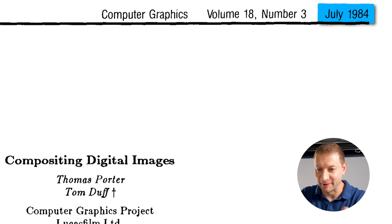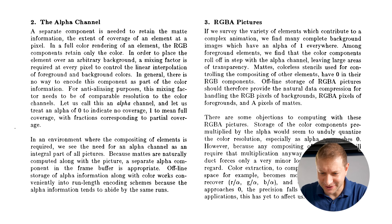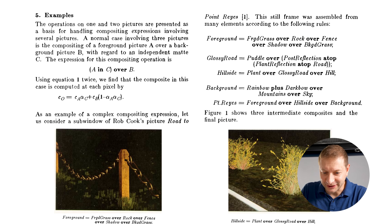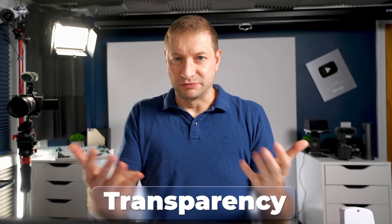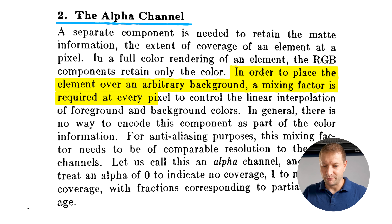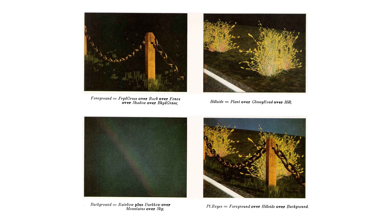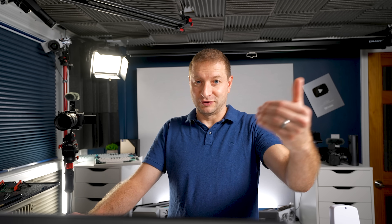Now look, this is not anything new. In 1984, a paper was published on compositing digital images by Porter and Duff — pretty famous — which talks about how images mix together. It covers the alpha channel: that transparency. In order to place an element over an arbitrary background, a mixing factor is required at every pixel to control the linear interpolation. It basically says that no matter what you do, there's a computational cost, and that computation has to be done on the CPU or GPU, and that's going to cost more battery.